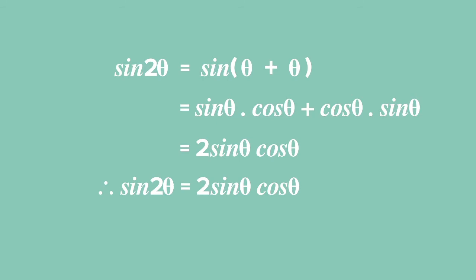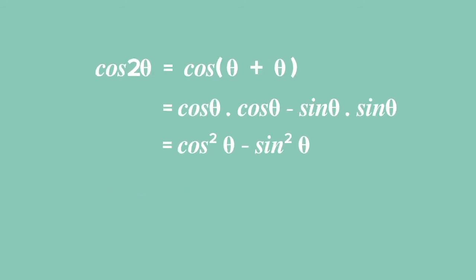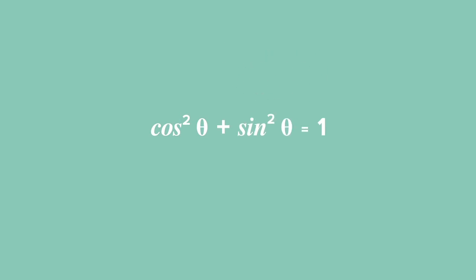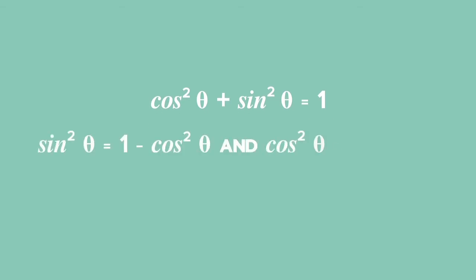This double angle expansion is true for sin only. Similarly, we can find the cosine expansion of a double angle: cos 2θ equals cos² θ minus sin² θ. This result can be modified by using the square identity from grade 11: cos² θ plus sin² θ equals 1. From this identity, we can write sin² θ as 1 minus cos² θ and cos² θ as 1 minus sin² θ.